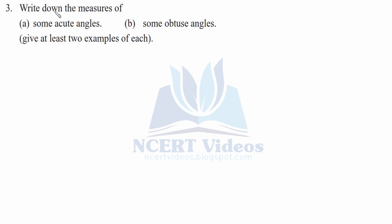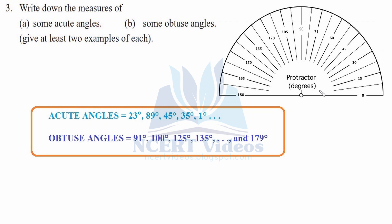Third, write down the measures of some acute angles and some obtuse angles — give at least two examples of each. With the help of a protractor, we will measure the degrees. Acute angles are less than 90 degrees and greater than 0 degrees. Examples include 23 degrees, 89 degrees (just less than 90, the last measure of acute angle), 45 degrees in the center, 35 degrees, and so on — you can name others.